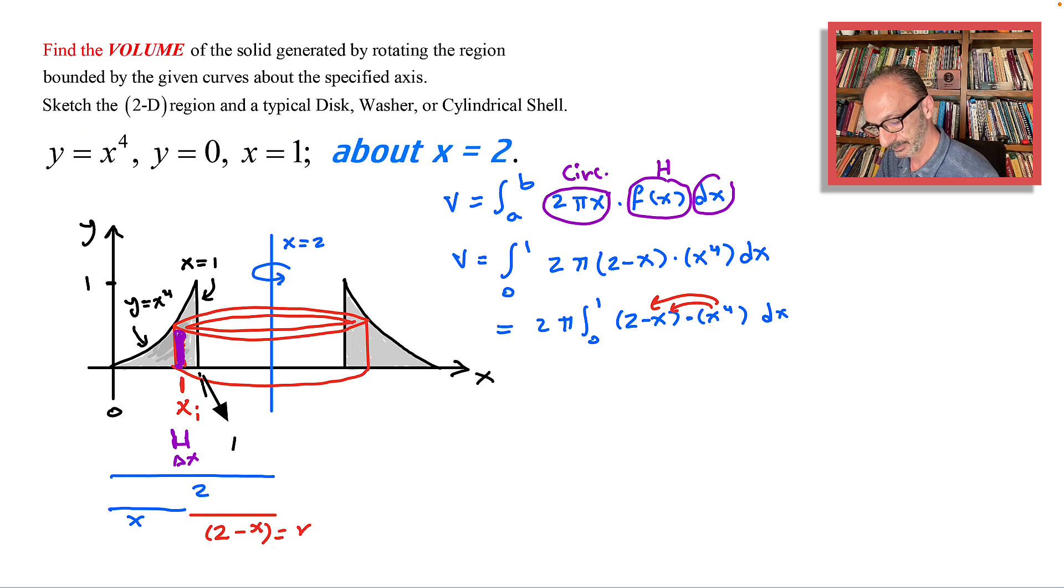And we end up with 2 pi from 0 to 1, 2 x to the 4 minus x to the 5th, all with respect to dx.